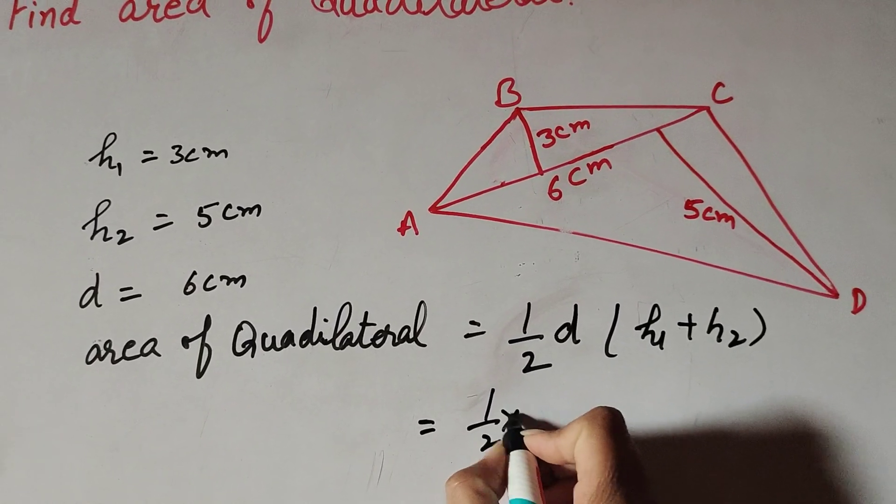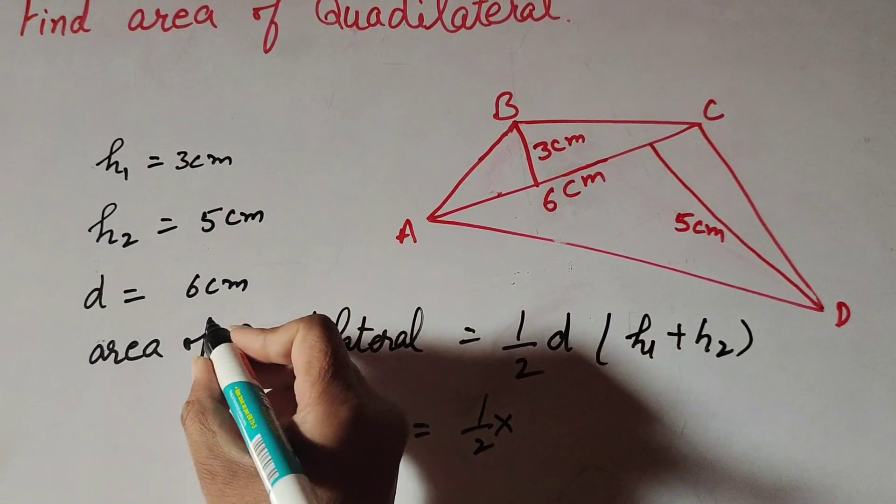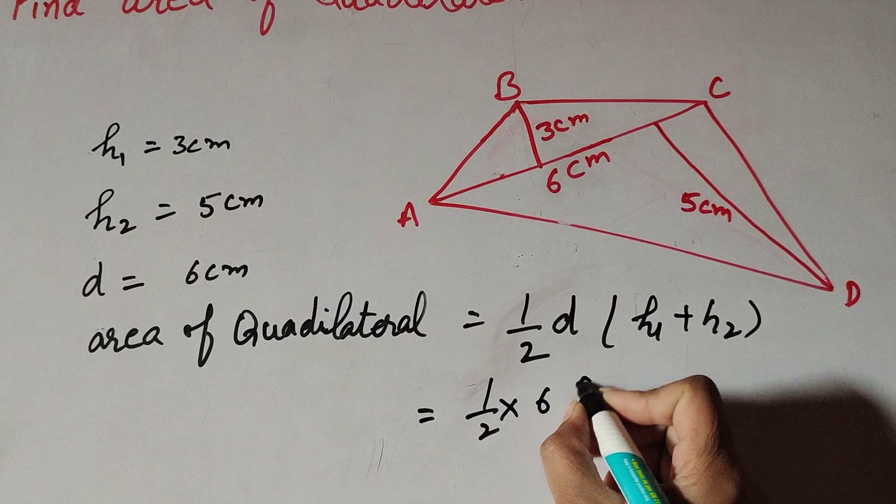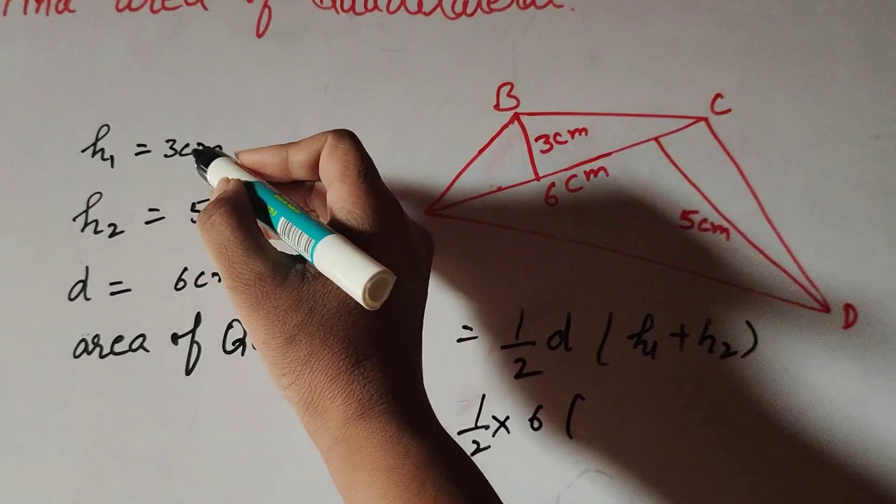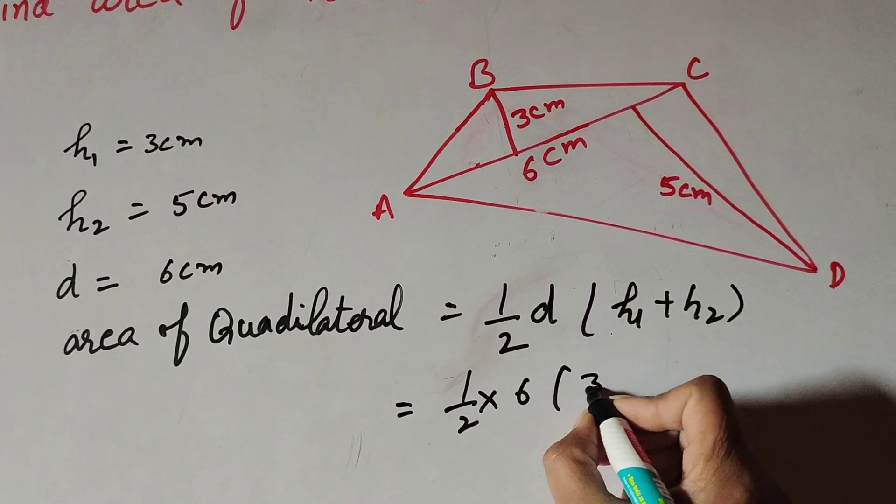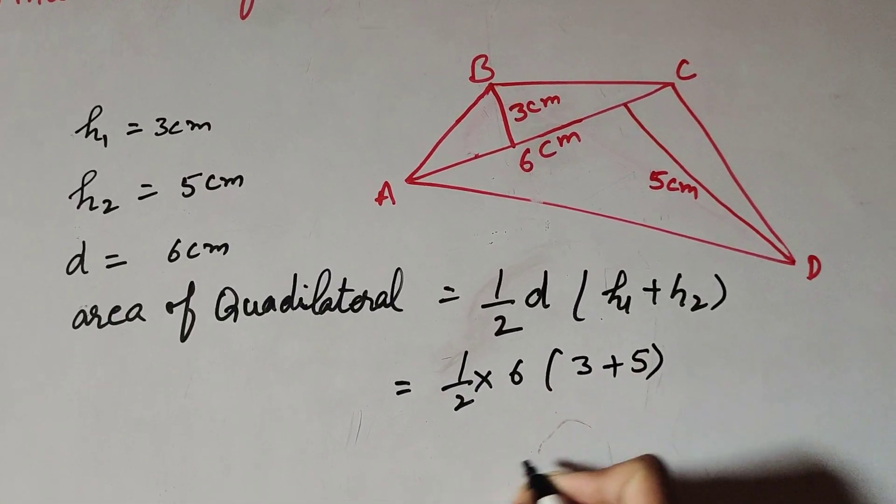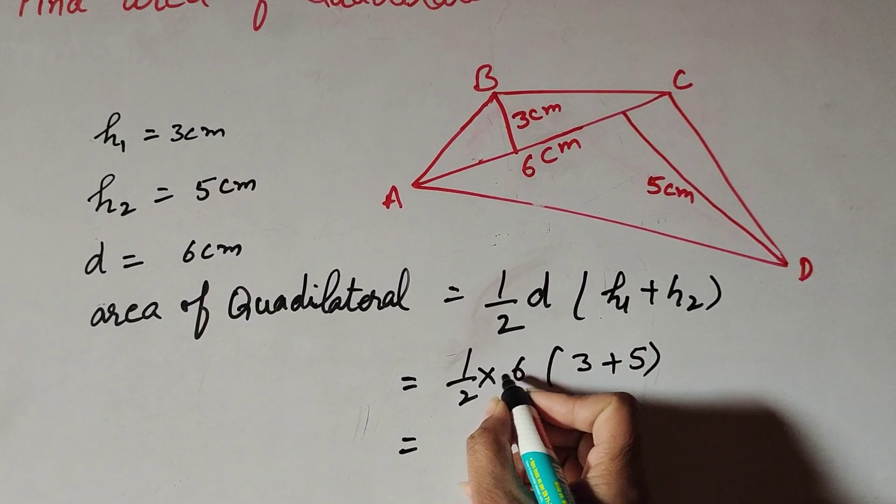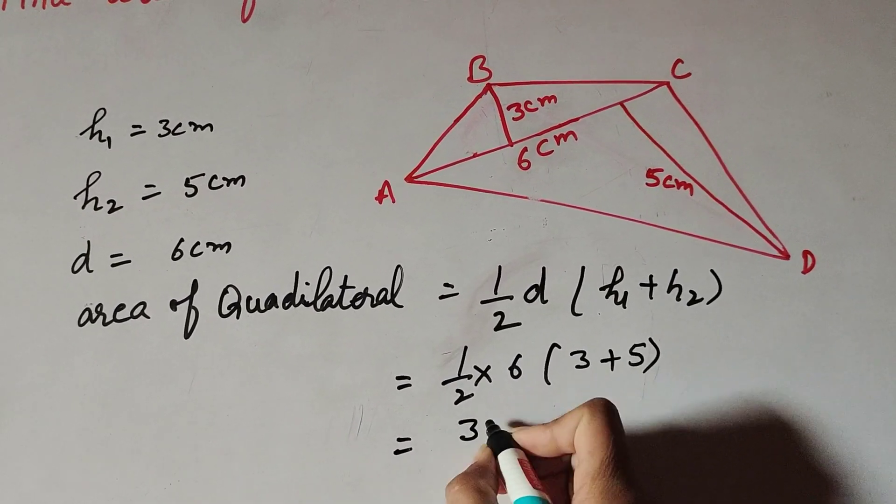d, the diagonal, is equal to 6 centimeter. Multiply 6 times h1 plus h2. h1 is 3 centimeter and h2 is 5 centimeter. 3 plus 5. 6 is divisible by 2, so we get 3.